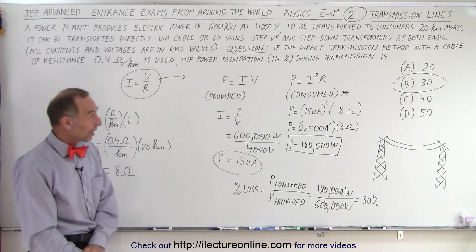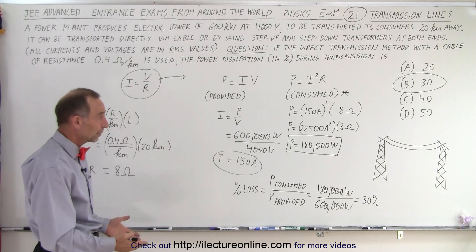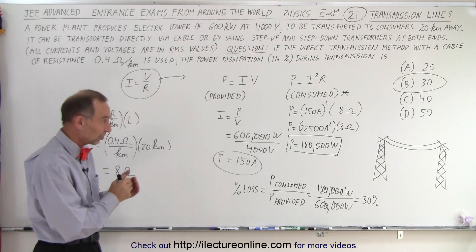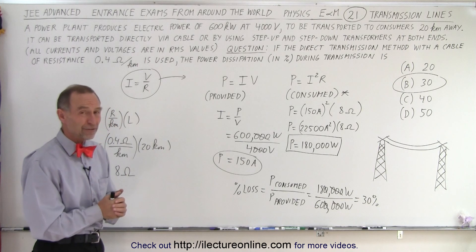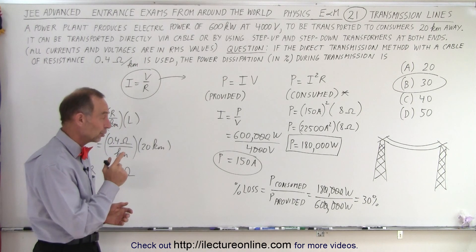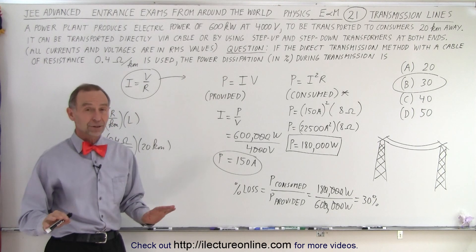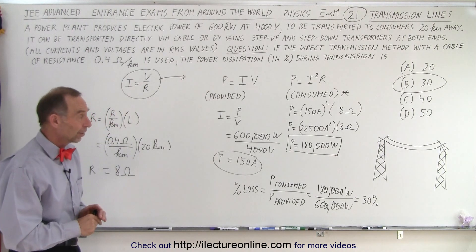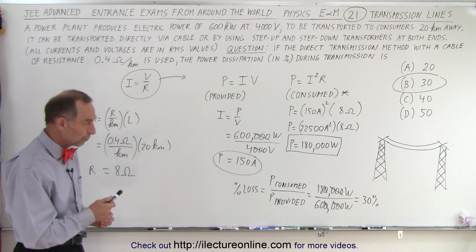So believe it or not, if you were to send 600,000 watts of power, that's 600,000 joules per second of power, across these transmission lines, 20 kilometers, 8 ohm lines, 150 amps of current required to do so, you will lose 30 percent of your power. Not a good thing that you lose that much power. So there's got to be a way to change that, to improve upon that.